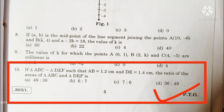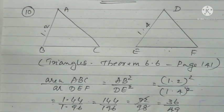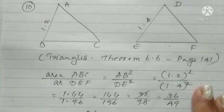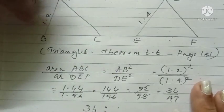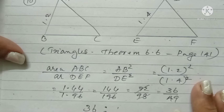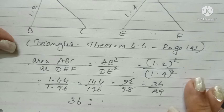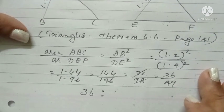If triangle ABC is similar to triangle DEF, such that AB is equal to 1.2 cm, DE is equal to 1.4 cm, the ratio of the area of triangle ABC and triangle DEF is dash. We know that the ratio of the area of two similar triangles is equal to the square of the ratio of their corresponding sides. Therefore, in the question, it is given that the two triangles are similar. Therefore, we can write the area of triangle ABC divided by area of triangle DEF is equal to AB square divided by DE square. AB is 1.2, 1.2 the whole square divided by 1.4 the whole square. On simplifying, we will get 36 divided by 49. Therefore, the ratio will be 36 is to 49.